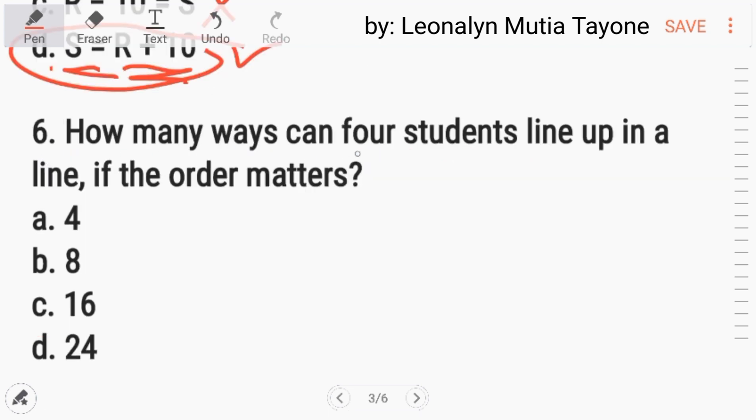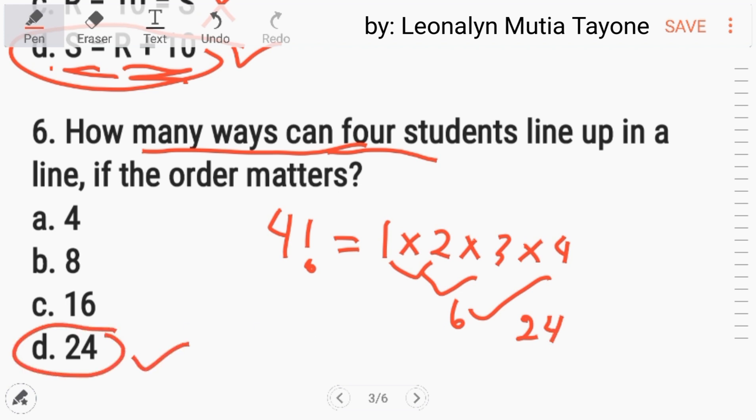Number 6: How many ways can four students line up in a line if the order matters? Four students, how many ways? Pag ganito, ganyan lang yan. Factorial of four. So that is one times two times three times four. One times two equals two. Two times three equals six. Six times four equals twenty-four. So, the answer is letter D.